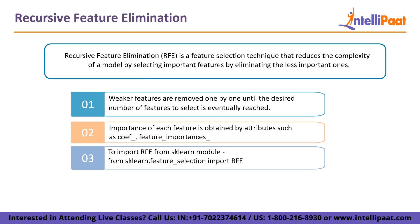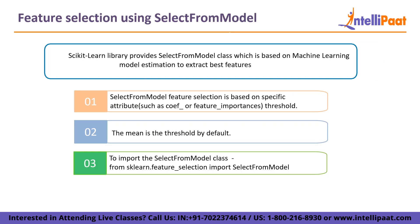The third method is recursive feature elimination. Recursive feature elimination is a feature selection technique that reduces the complexity of a model by selecting important features and eliminating the less important ones. Features are removed one by one until the desired number of features to select is eventually reached. Importance of each feature is obtained by attributes such as coef_ or feature_importances_. To import RFE from the sklearn module, you can use the following function. Next comes feature selection using SelectFromModel. The Scikit-Learn library provides the SelectFromModel class, which is based on machine learning model estimation to extract best features. SelectFromModel feature selection is based on specific attributes such as coef_ or feature_importances_ threshold, with mean as the default threshold. To import the SelectFromModel class, we use the following function.